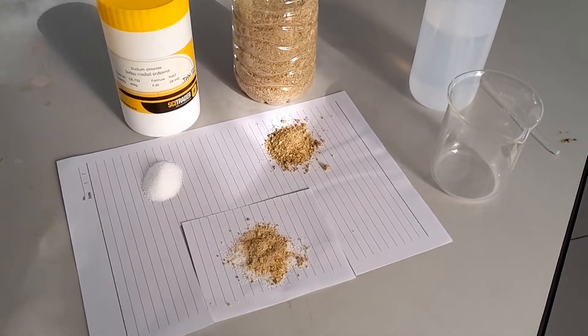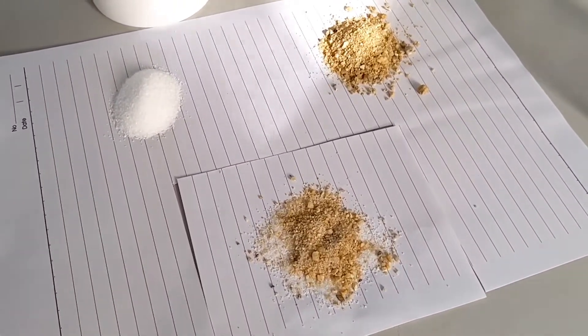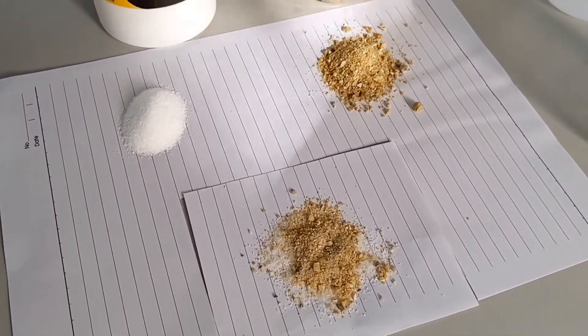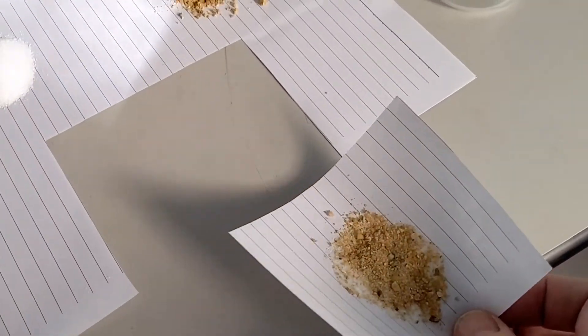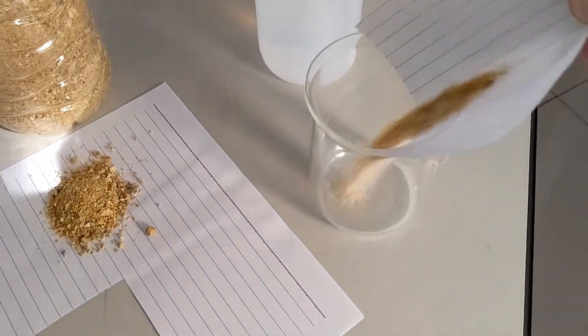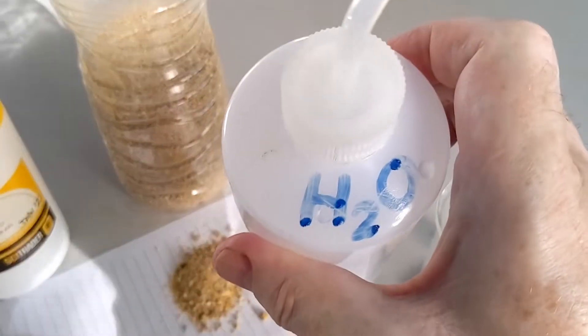Separating a mixture of salt and sand. How do we do it? Well first we take our mixture and we add water, H2O.